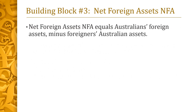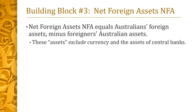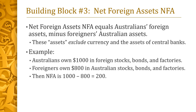We now turn to the third building block of the balance of payments: net foreign assets, abbreviated NFA. NFA is defined as the foreign assets of Australians minus the Australian assets of foreigners. For instance, suppose Australians have $1,000 invested in foreign assets such as stocks, bonds, and factories, while foreigners have $800 invested in Australian assets. Then NFA equals 1,000 minus 800, or $200.